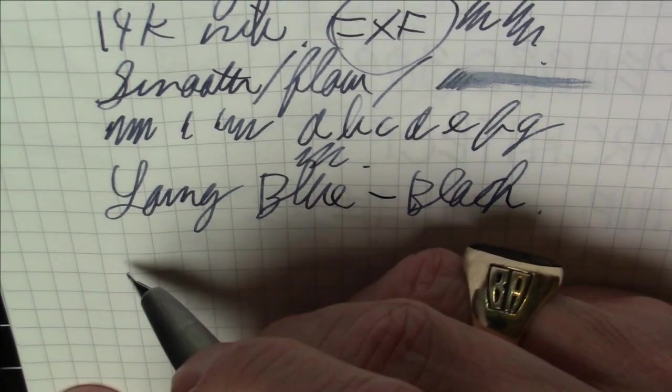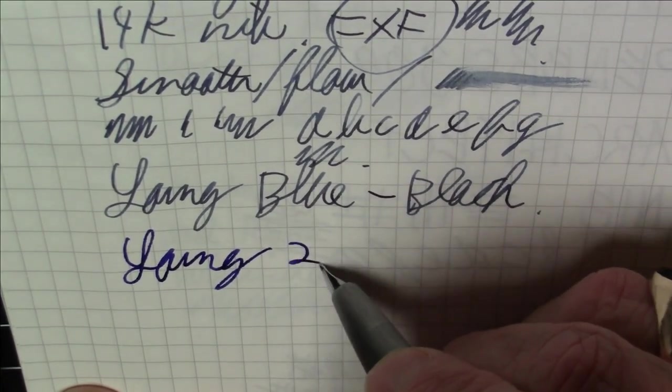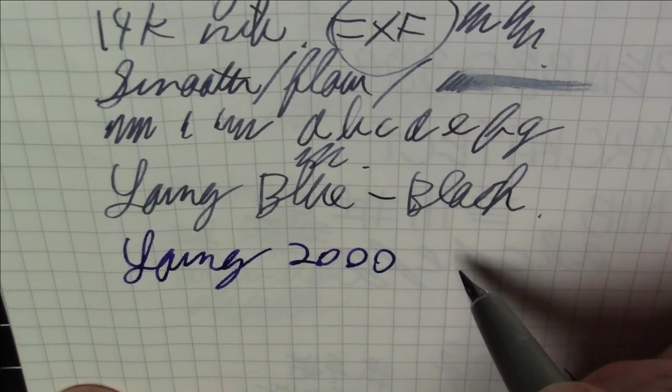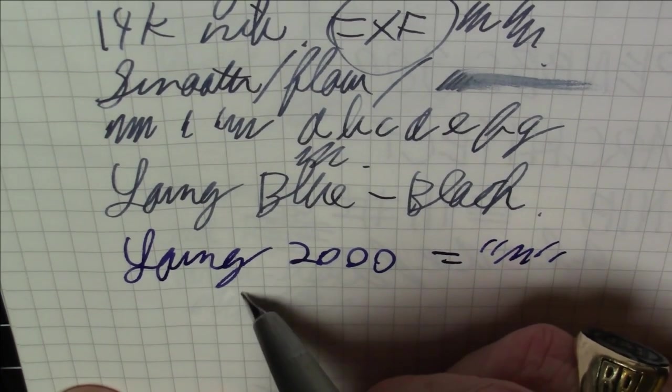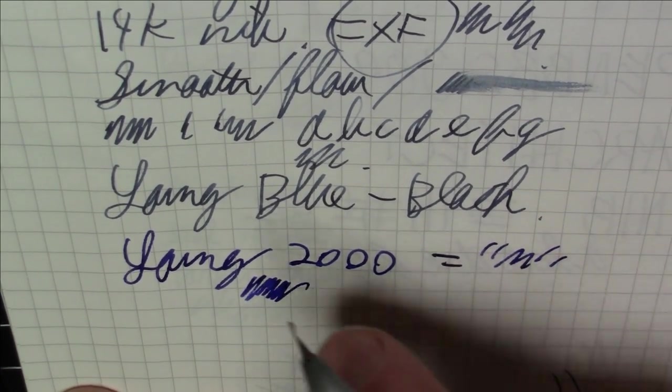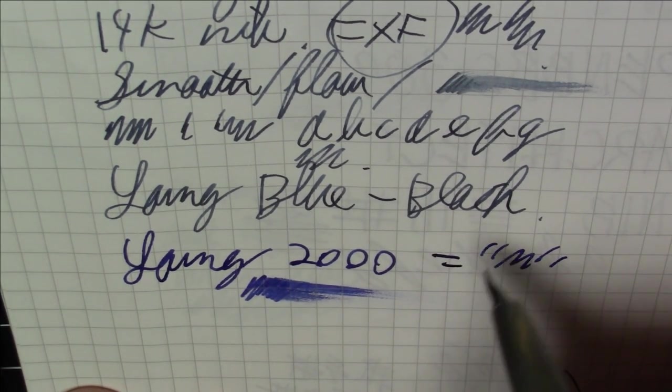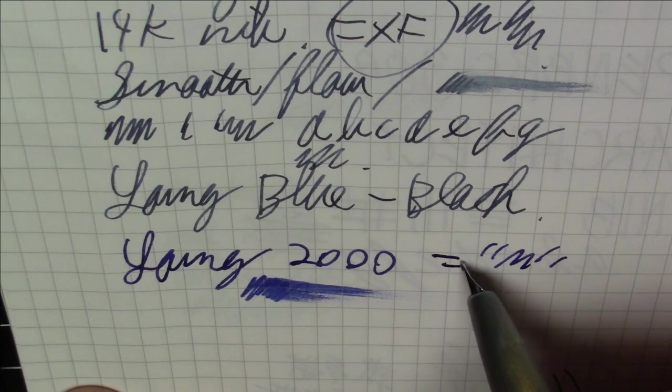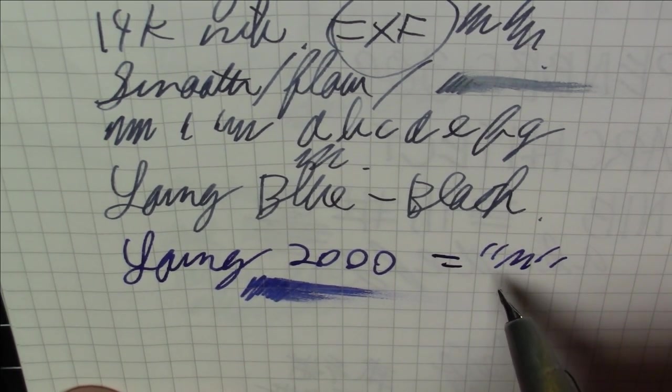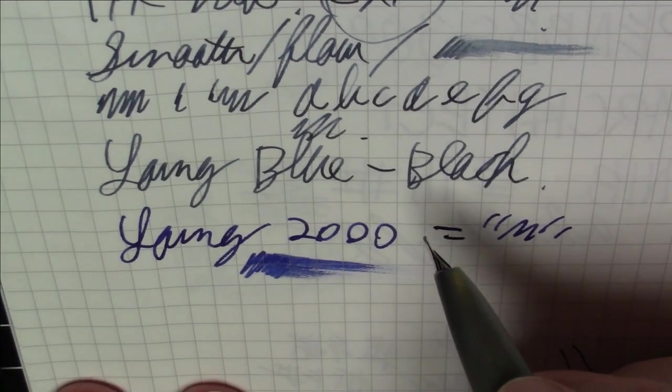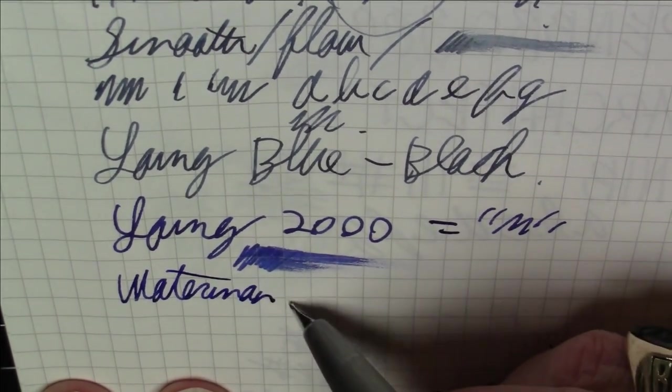If we want to contrast that one with my older Lamy 2000 in medium we can certainly do that so this one here is a Lamy 2000 in medium as you can see it's laying down quite a bit more ink. It's definitely wetter and broader and all that so this is a medium and this probably would be a broad in most other vendors worlds but this is a medium and in case you're interested this ink is Waterman Serenity Blue.